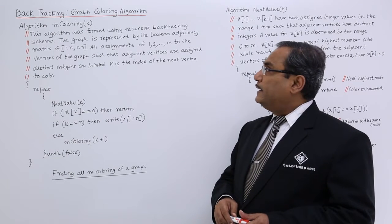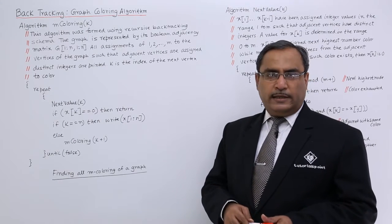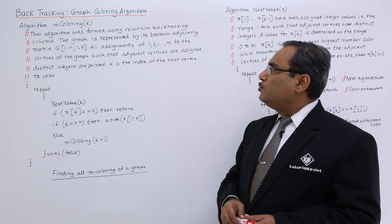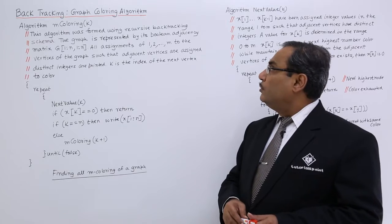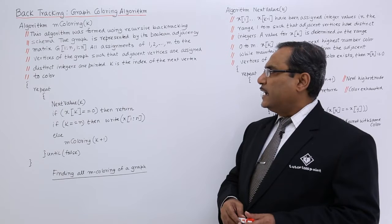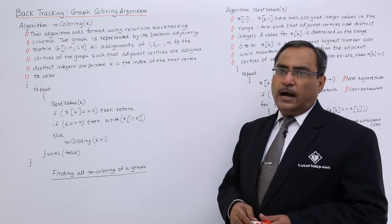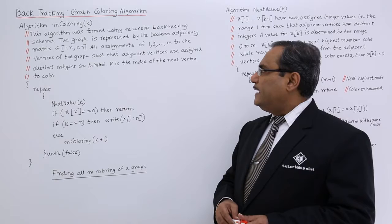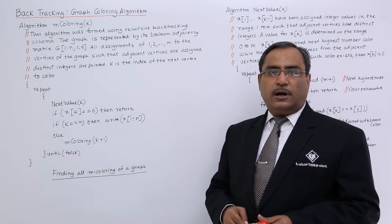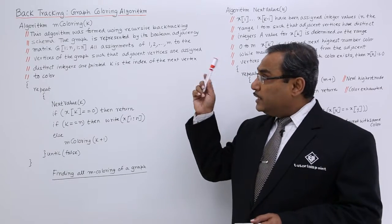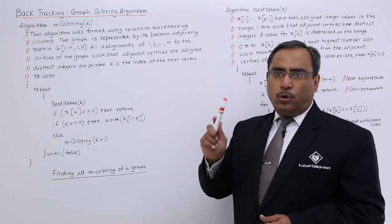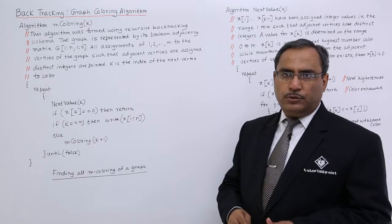The graph is represented by its Boolean adjacency matrix of size n×n. All assignments of 1 to m — where m is the chromatic number — to the vertices such that adjacent vertices are assigned distinct integers are printed. k is the index of the next vertex to color, so from the main function we pass m-coloring(1) because the first node has to be colored.